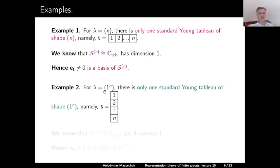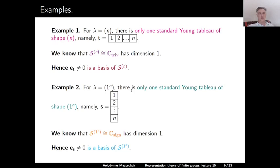Similarly, if we consider the partition (1,1,...,1) of n, there is only one standard Young Tableau — we write elements 1 to n in the natural order in one column. Again, the corresponding Specht module is one-dimensional (the sign module), and therefore the polytabloid associated to this standard Young Tableau is a non-zero element of a one-dimensional module, so it forms a basis of this module.